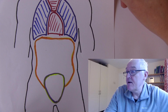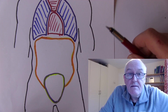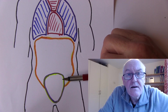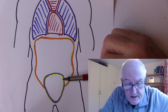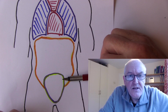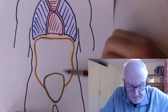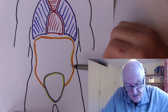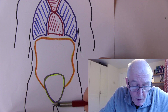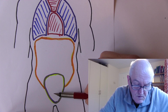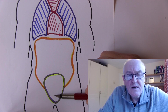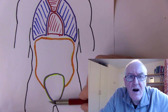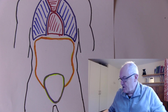Further down is the pelvic cavity. In females this contains the ovaries, uterine tubes, uterus, vagina, and bladder. In males, sperm from the testes travels up into the pelvic cavity to mix with secretions from the prostate gland. The pelvic cavity is defined by the bones of the pelvic rim.